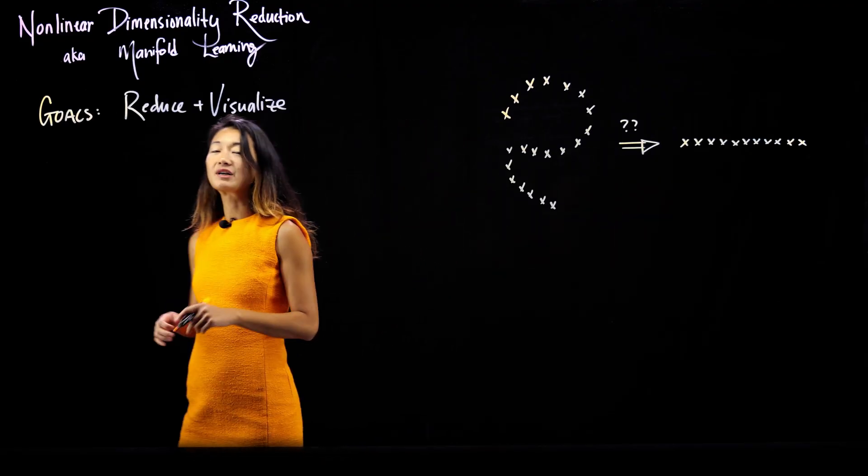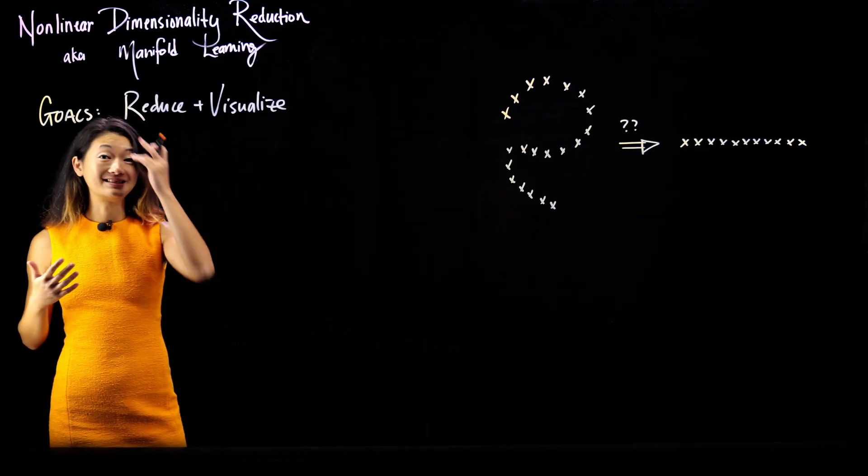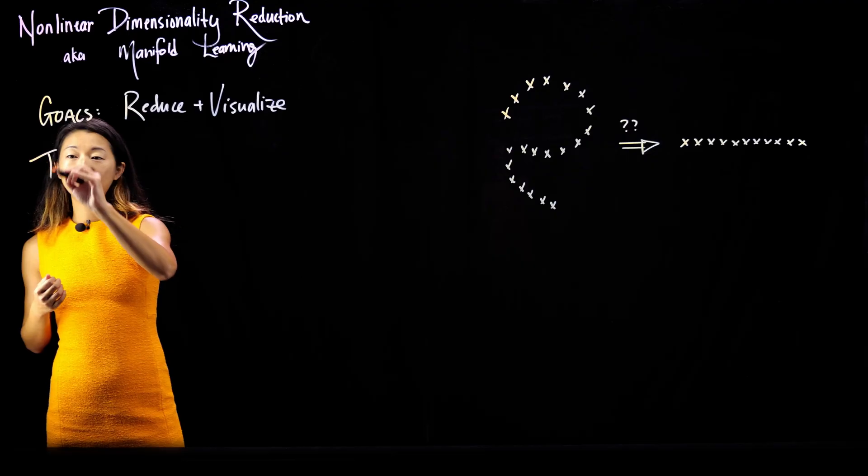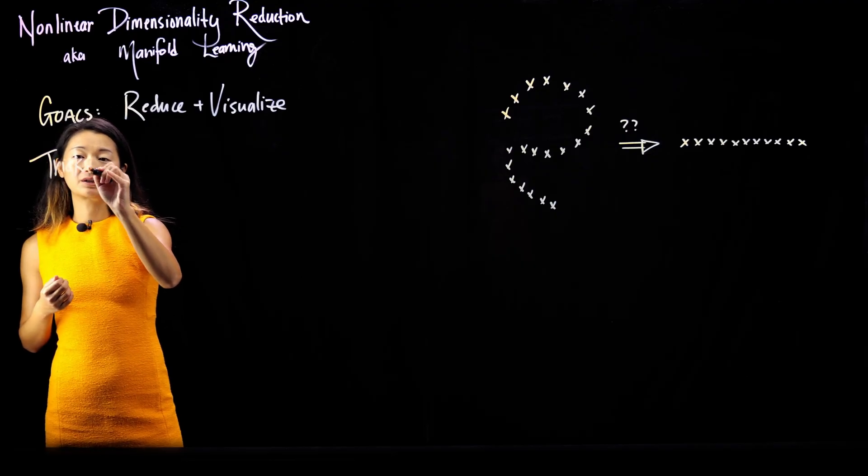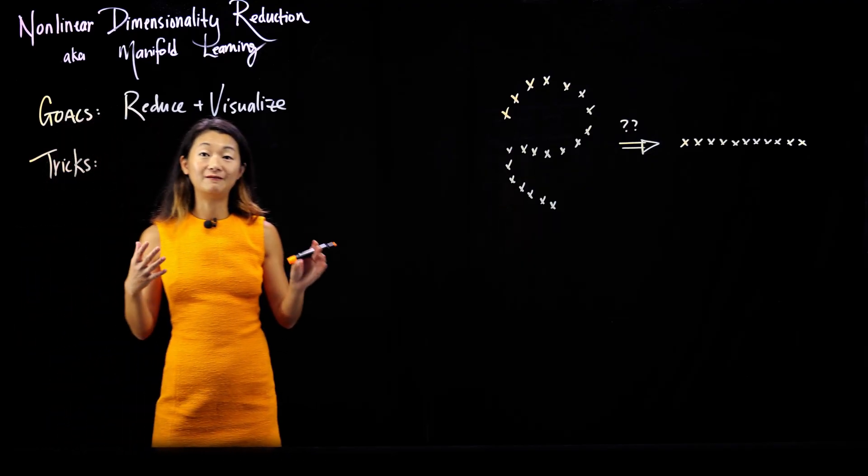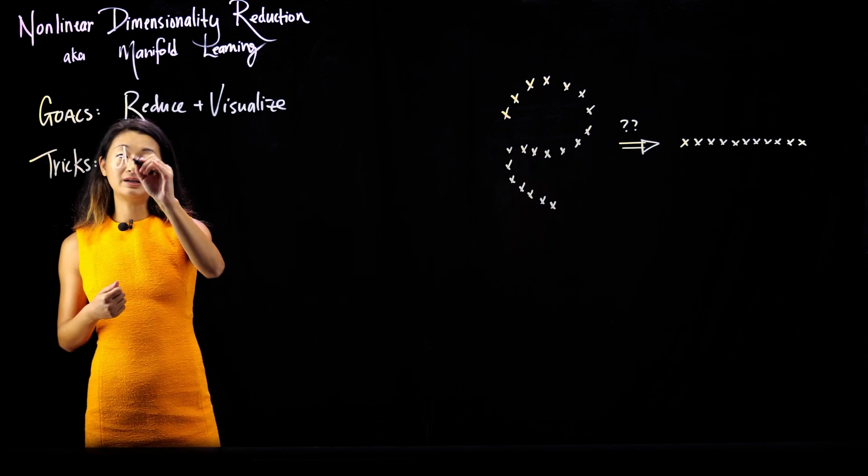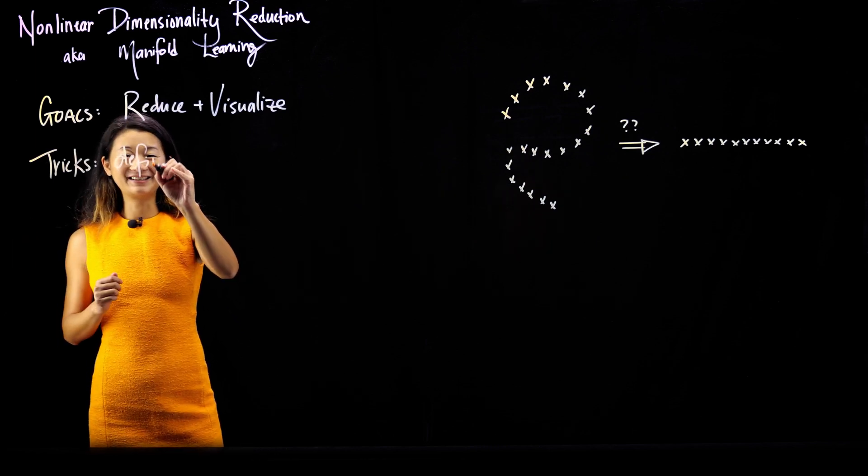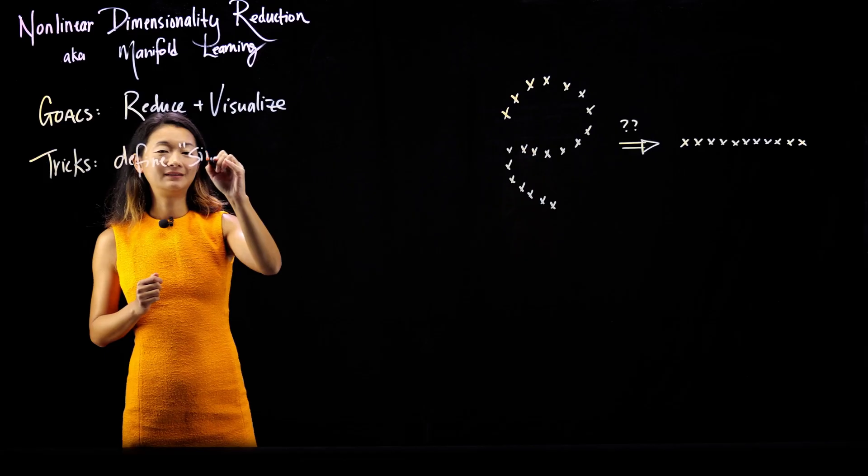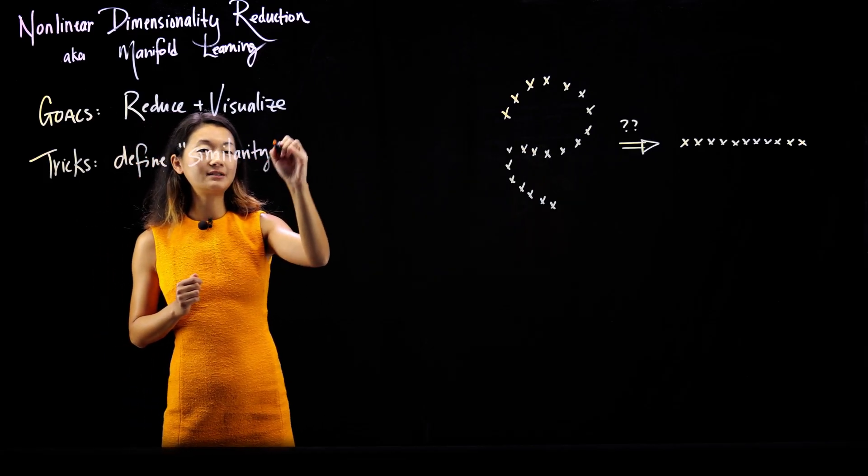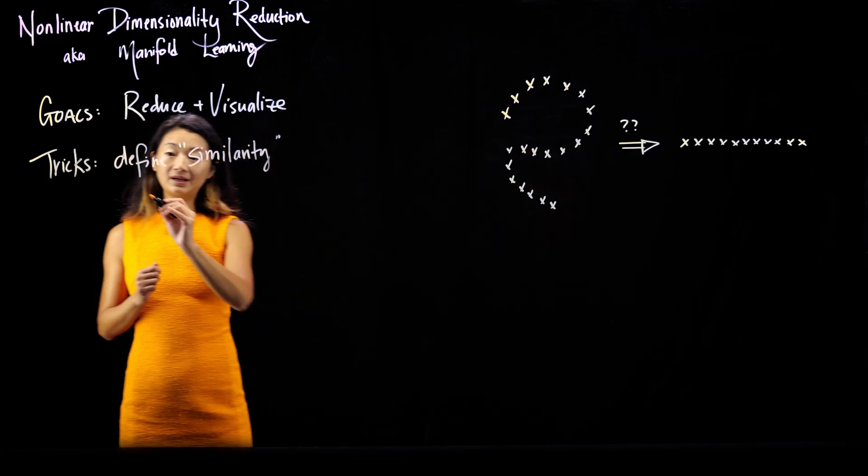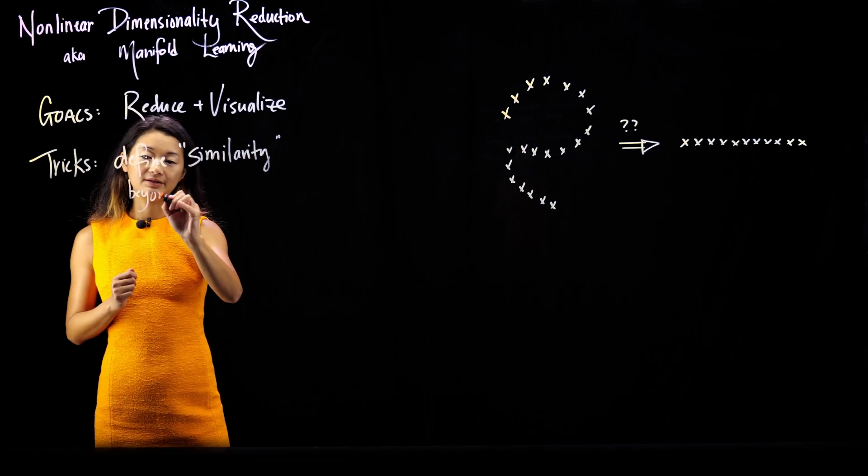Now, the trick here is that we've talked a lot about defining distances, Euclidean distances. The trick here with non-linear dimensionality reduction is that we can no longer be confined by this notion of Euclidean distance. So we can define similarity using fancier techniques that are still based on Euclidean distance but are no longer simply Euclidean distance.